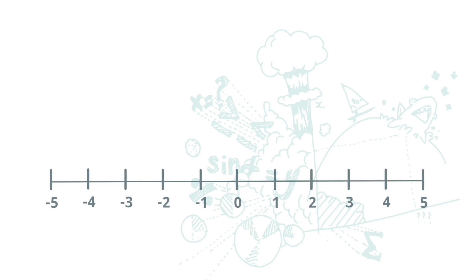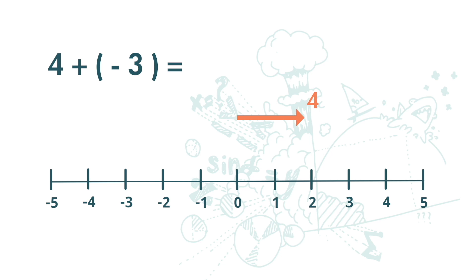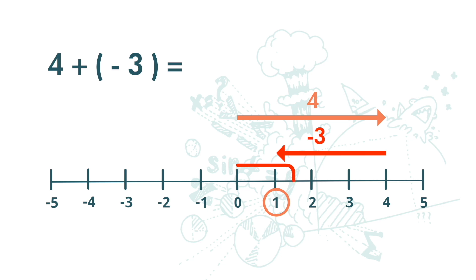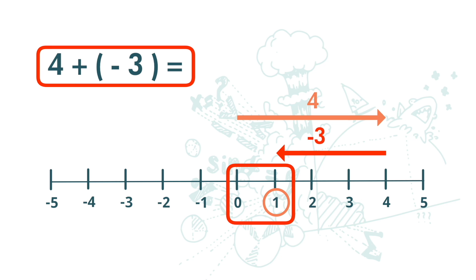Next, let's look at 4 plus negative 3. With positive 4, we move 4 units to the right. With negative 3, we move 3 units to the left. So the answer is 1. 4 plus negative 3 is actually 4 minus 3, and the answer is 1.